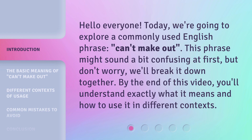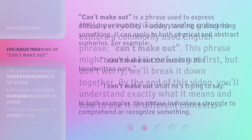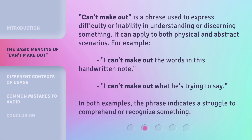This phrase might sound a bit confusing at first, but don't worry — we'll break it down together. By the end of this video, you'll understand exactly what it means and how to use it in different contexts. 'Can't make out' is a phrase used to express difficulty or inability in understanding or discerning something.